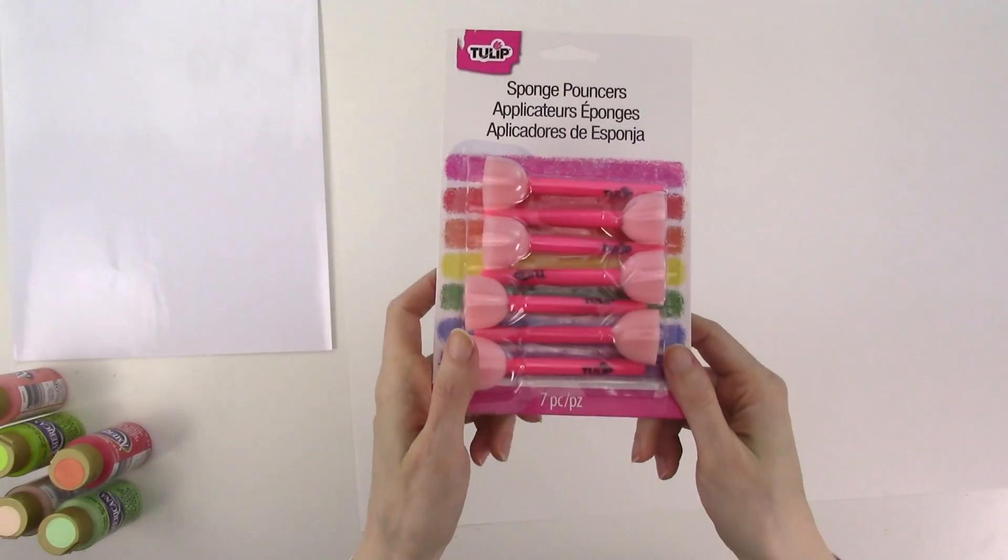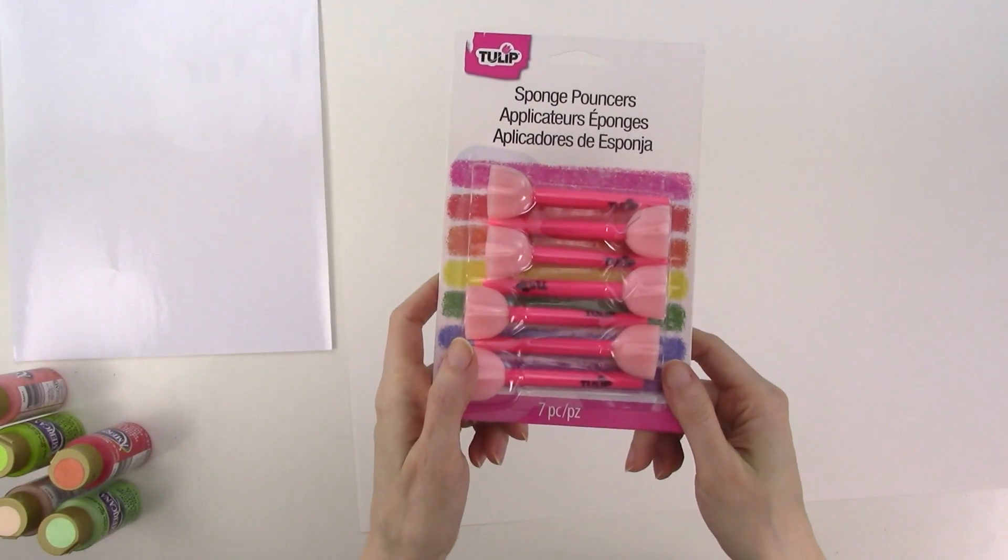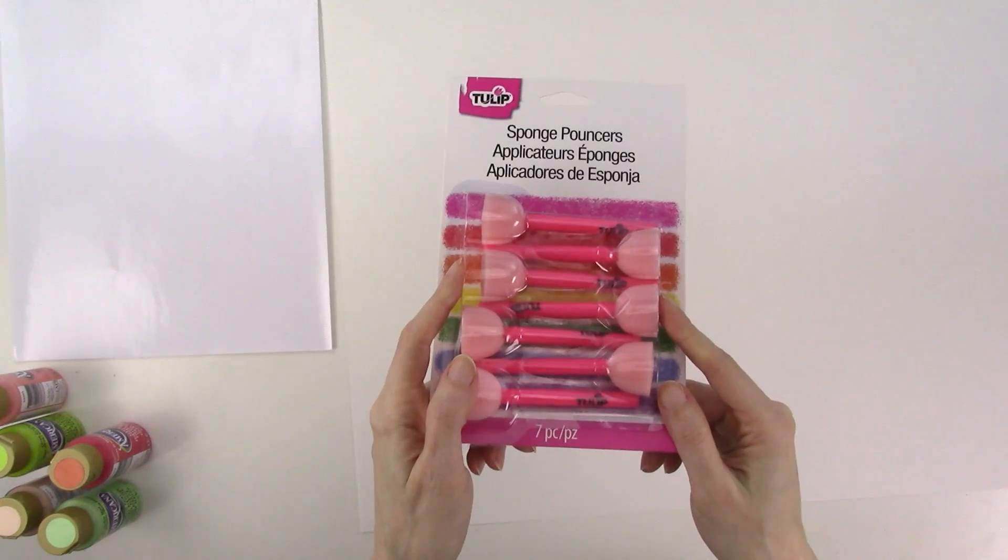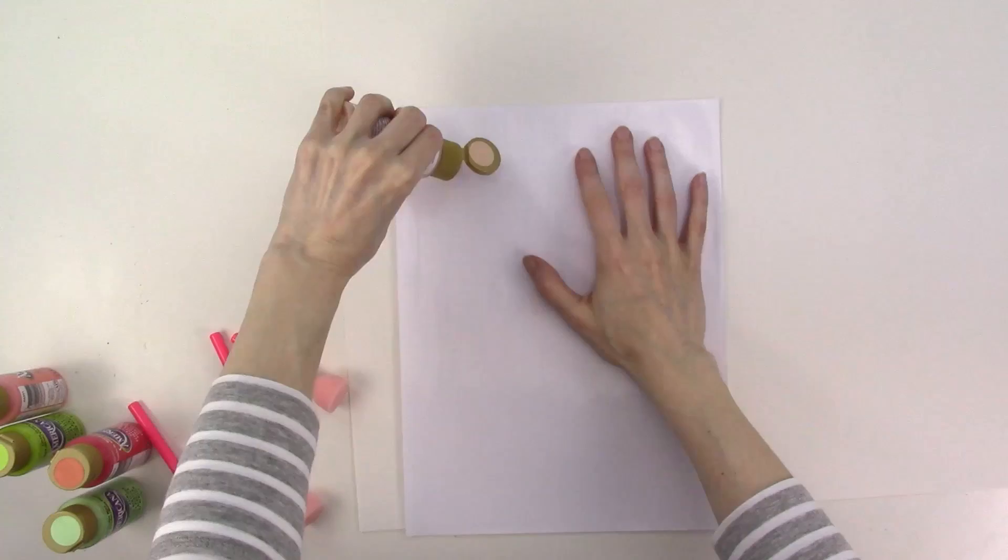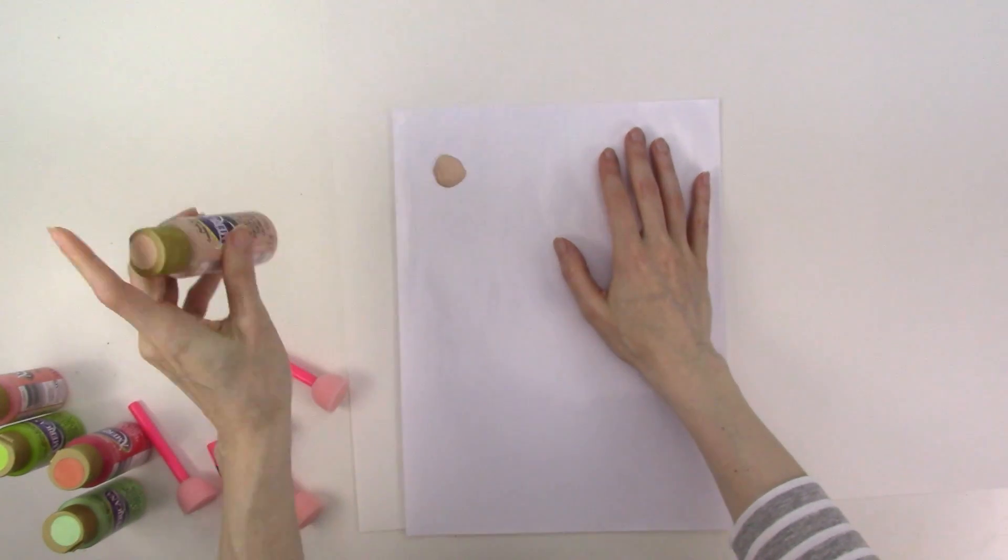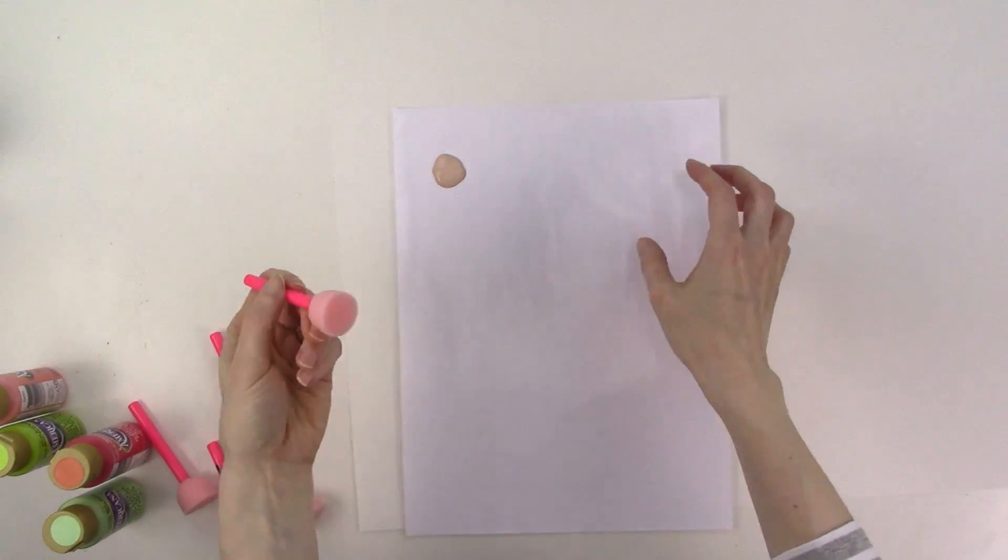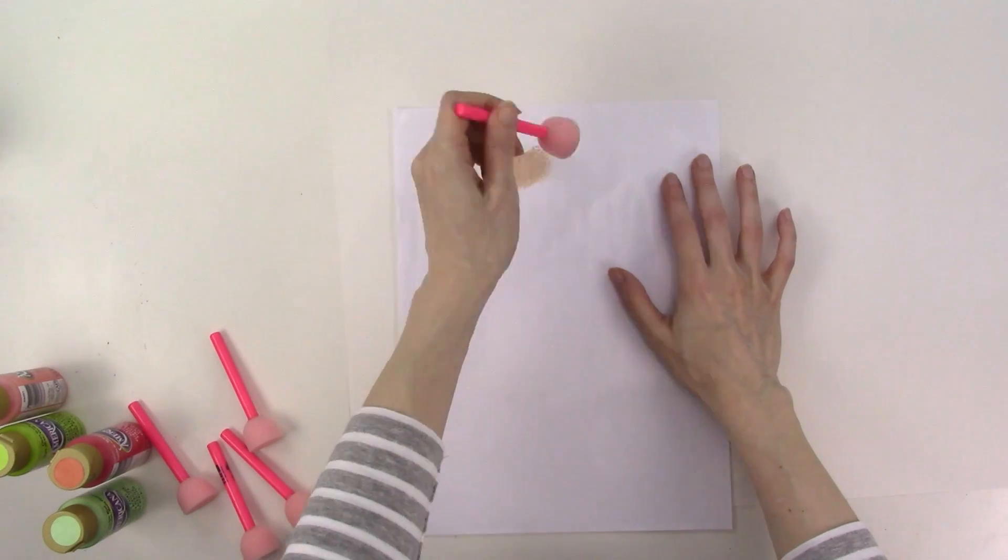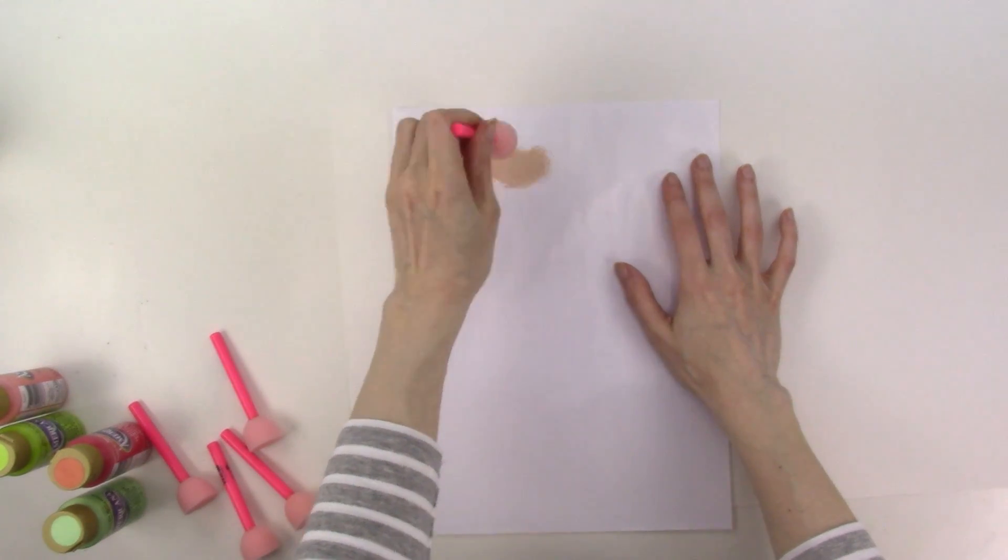The first wrapping paper that I'll be making is going to have a polka dot pattern. And to make the dots, I'll be using the sponge pouncers from Tulip. I'll use a different pouncer for each color. And now I'm going to squeeze some of the first paint color that I'll be using onto the palette paper. Next, I'll load my pouncer with paint and pounce off any excess onto the palette paper.